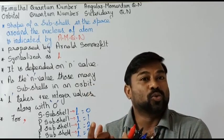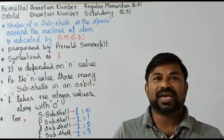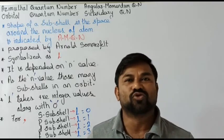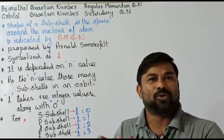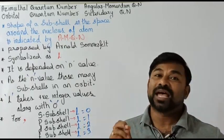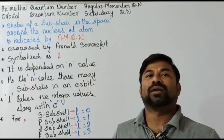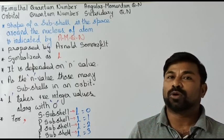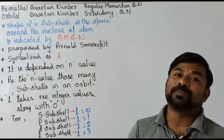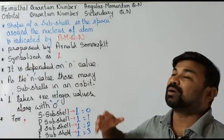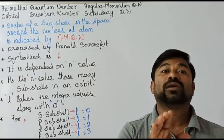It tells how the electron is oriented — whether along the x-axis, y-axis, or z-axis, and in which direction it is moving. To indicate and describe that, Erwin Schrödinger proposed the mechanical model of the atom. In that model, we have four quantum numbers. The first is the principal quantum number, and the second is the azimuthal quantum number.